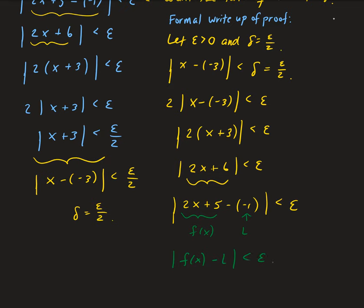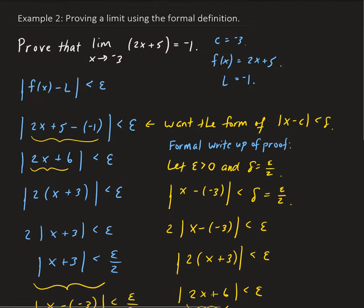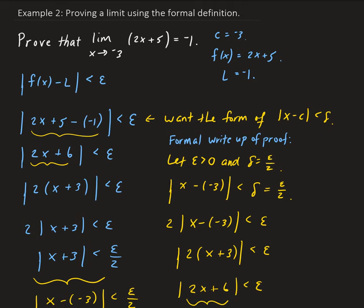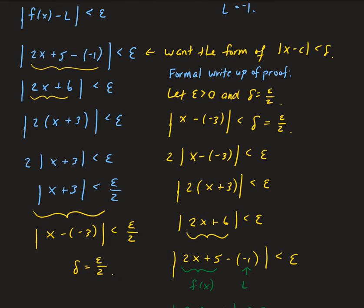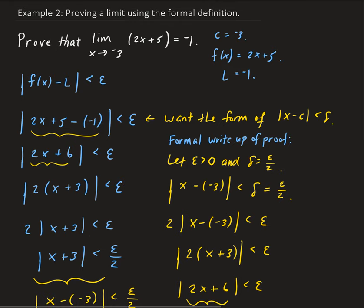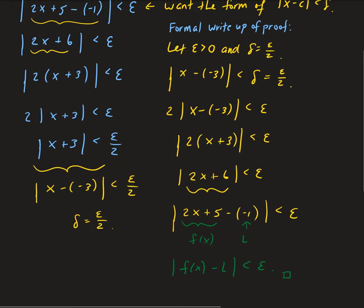And that concludes our proof. You always start with the neighborhood around epsilon, then work through the algebra to get the corresponding delta neighborhood, and that gives you the value of delta. Then you basically just reverse the steps. Make sure you declare your values — you always have to say epsilon is strictly greater than zero and define what your delta is. The overall picture is that for any epsilon, we can always find a delta. In this case we take half of it, so no matter how small epsilon is, we can always find a delta. That is the formal proof of this limit.